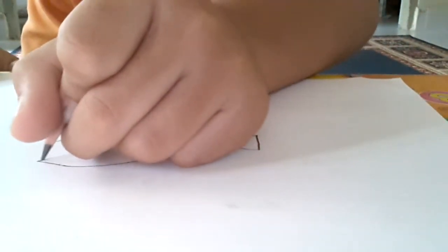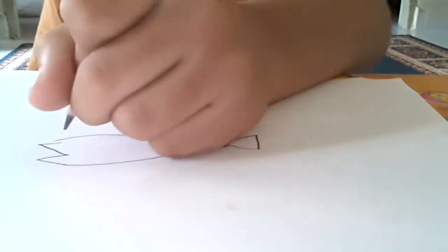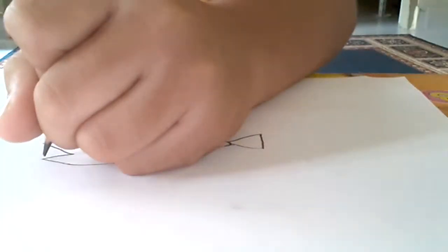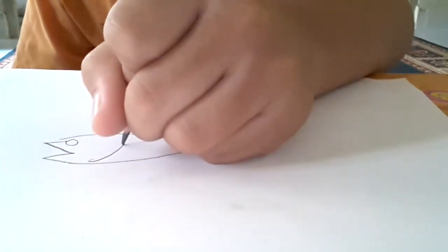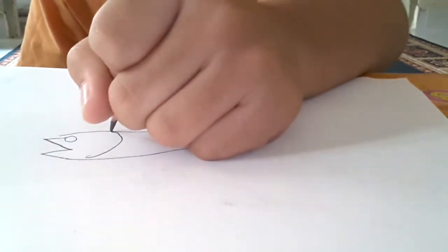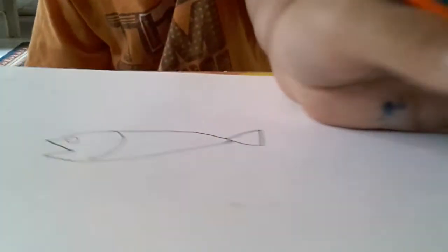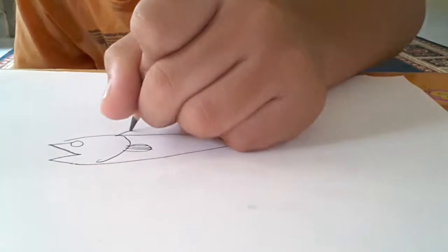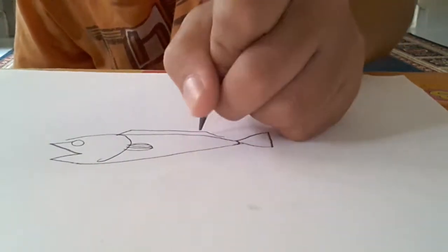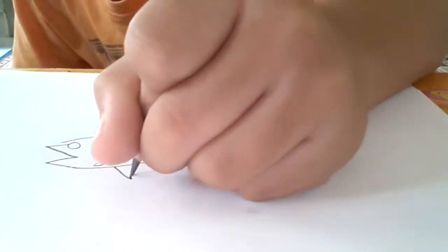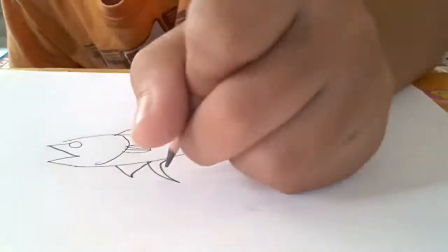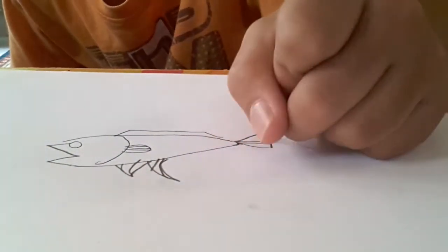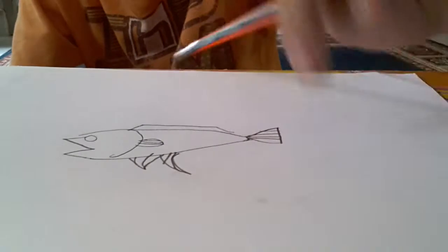Then you draw the scales on the fish, and then you draw the fins. Draw the pectoral fin just below that. Draw some lines to make it look more pretty, and then you draw the lines on the tail too.